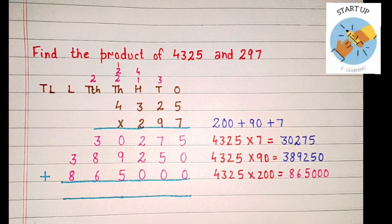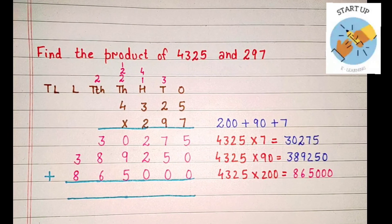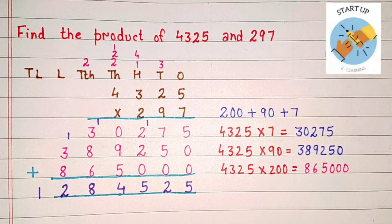Now to get the final product, we are going to add these partial products together. Let's start adding from ones place: 5 plus 0 plus 0 equals 5. Seven plus 5 equals 12; 2 will be written under tens place and 1 carried to hundreds place. Two plus 2 plus 1 equals 5; 5 will be written under hundreds place.